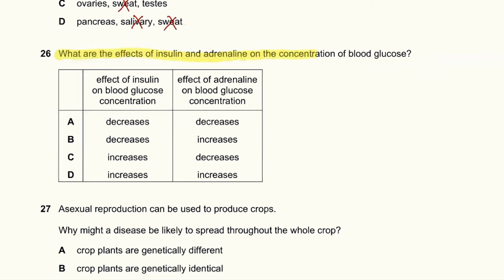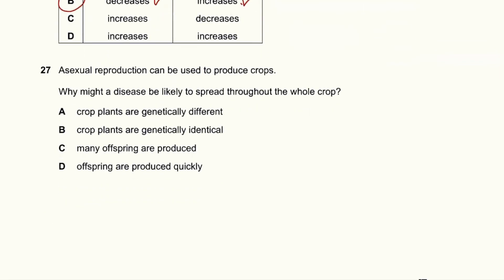Question 26: What are the effects of insulin and adrenaline on blood glucose concentration? Insulin is responsible for decreasing blood glucose concentration, whereas adrenaline stimulates the liver to increase blood glucose concentration. So B is the answer.